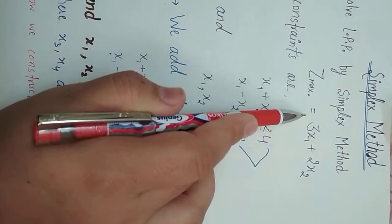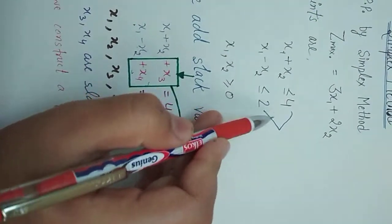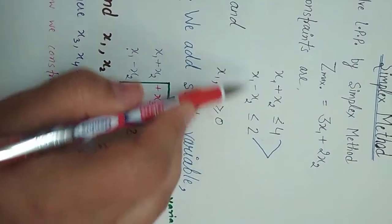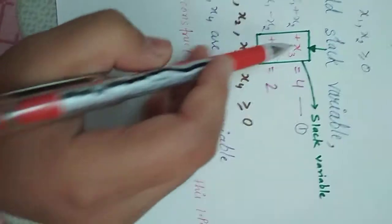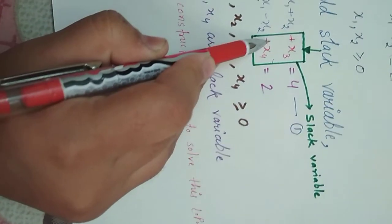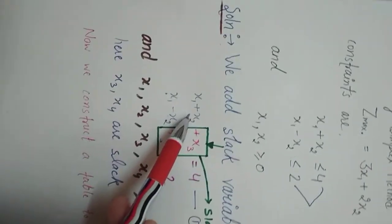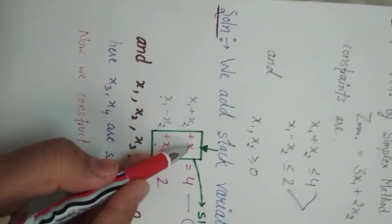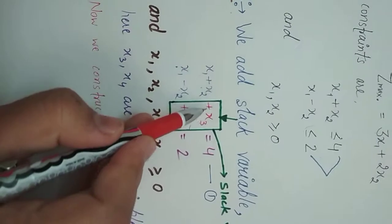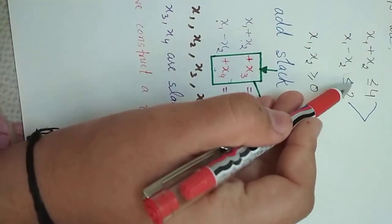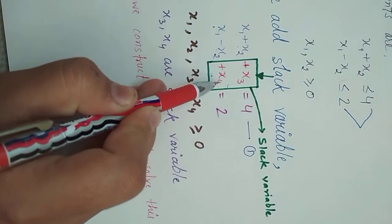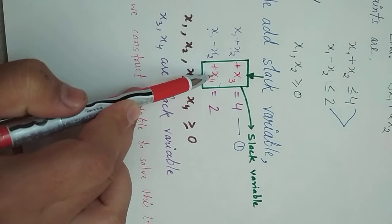We solve this question with the help of the simplex method. Z maximum equals 3x1 plus 2x2, and two inequalities are given: x1 plus x2 is less than 4, and x1 minus x2 is less than 2. The less-than signs can be removed by adding slack variables, so x1 plus x2 plus x3 equals 4, and x1 minus x2 plus x4 equals 2.